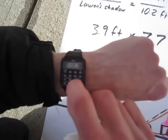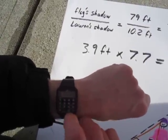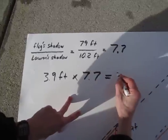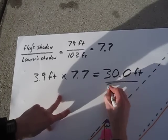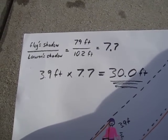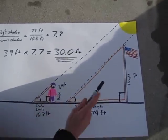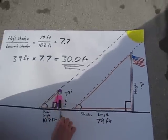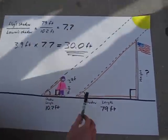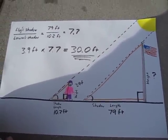So if I do Lauren's height — 3.9 feet — times our scale factor of 7.7, that should give us the height of the flag. 3.9 times 7.7 equals 30.0 feet. So that is the height of the flagpole. It's a 30-foot flagpole, and it worked out. We used similar triangles to calculate this. I can't climb this high, but I can certainly find the height and shadow length of a person. If I get the shadow length of the flagpole, it's an easy task from there. Hope that made sense, and goodbye.